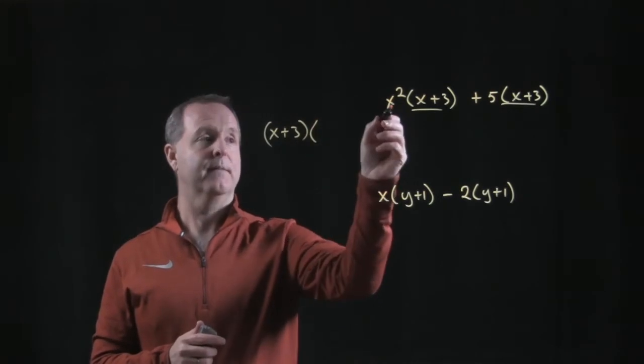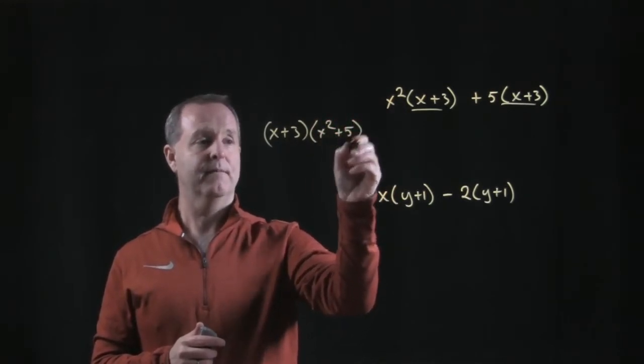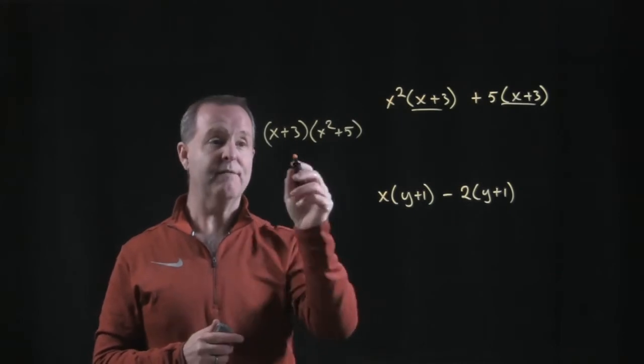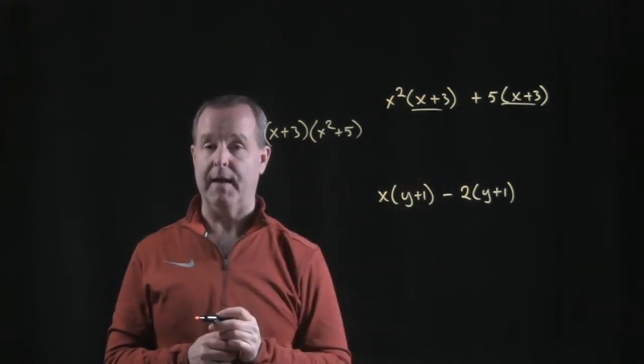And then what's left, an x squared plus a 5 is left. Now I can verify this by multiplying this through, and I'll get that result.